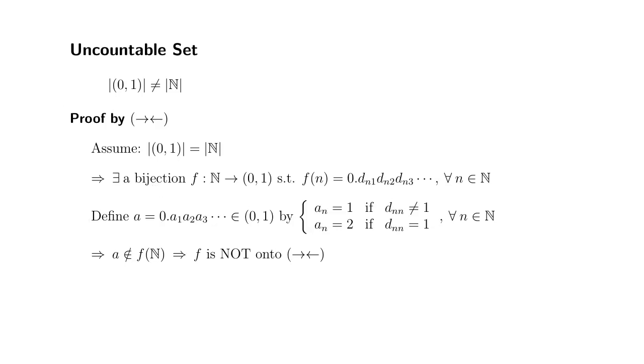Therefore, by proof by contradiction, we may conclude that the open interval from 0 to 1 is not countable, is uncountable. That's it. I hope that this was clear. Thank you.